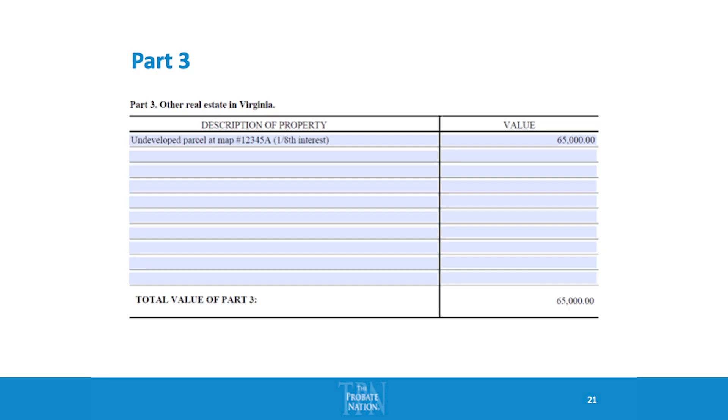Part three of the inventory covers assets where you do not have a power of sale. It's the same type of description, but the difference is there's no power of sale. If you wanted to sell it, you'd have to go to court and get a court order and permission to sell it.